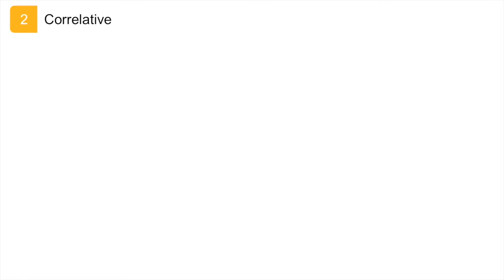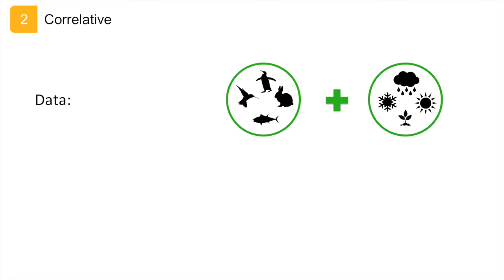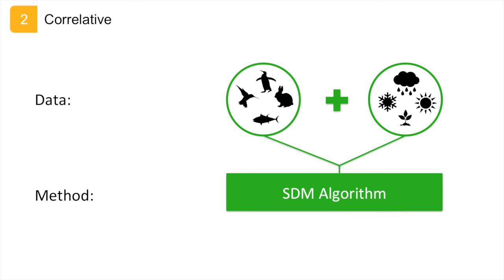To calibrate a correlative species distribution model, we need two types of input data: species occurrences and measurements of a suite of environmental variables, such as temperature and rainfall. These two types of data are then put into an algorithm to find associations between the known occurrences of a species and the environmental conditions at those sites, so we can identify the environmental conditions that are suitable for a species to survive — in other words, they describe relationships between species distributions and environmental variables.